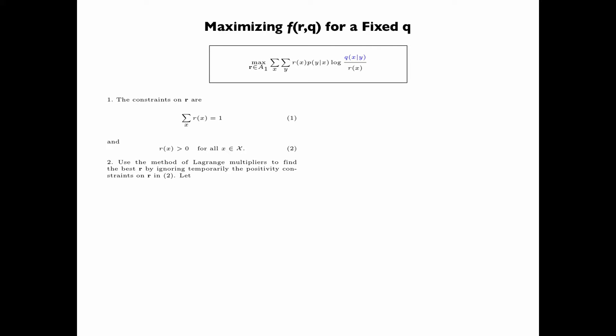Now we use the method of Lagrange multipliers to find the best R by ignoring temporarily the positivity constraint on R in equation 2. Let J be the double summation in the maximization problem minus lambda, the Lagrange multiplier, times summation of Rx, which is the equality constraint on the Rx's. For convenience sake, we assume that the logarithm is the natural logarithm. This makes no difference because we are doing maximization.